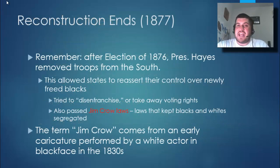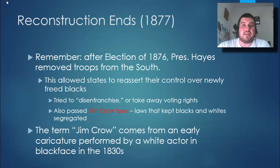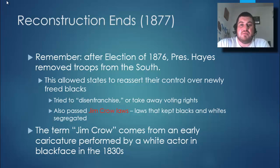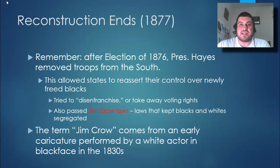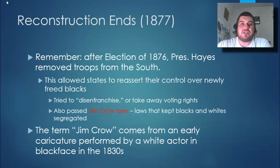When Reconstruction ends in 1877, President Hayes removed all of the troops that were occupying the South. That means states were now allowed to reassert their racist control over newly freed blacks. They tried to disenfranchise them — to take away their voting rights — and they also passed the Jim Crow laws, which kept blacks and whites segregated. The term Jim Crow actually comes from an early caricature performed by a white actor in blackface in the 1830s.